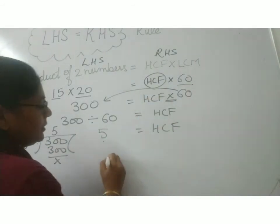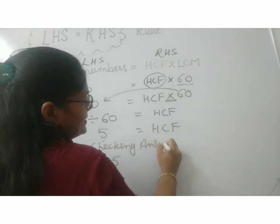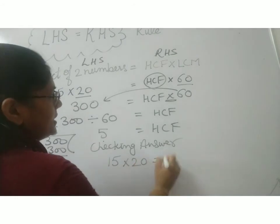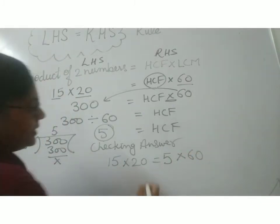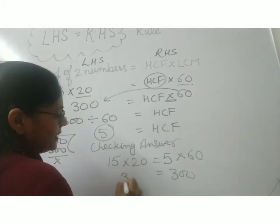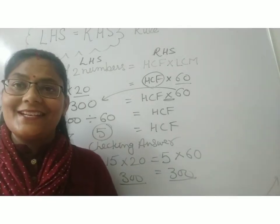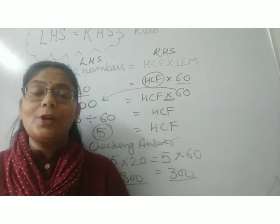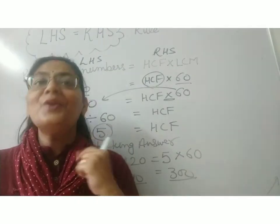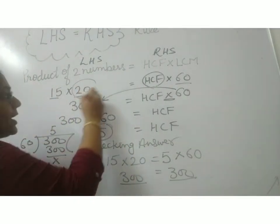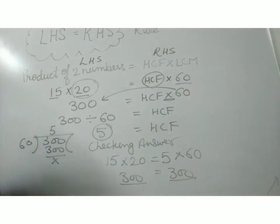Let's check the answer. 15 multiplied by 20 equals HCF 5 multiplied by LCM 60. That gives 300 equals 300. So left hand side is equals to the right hand side. Hence, you can use this LHS equals RHS rule in all equations wherever you have to find one unknown quantity — when two quantities are given, you can take the unknown quantity to the other side. Thank you so much children.